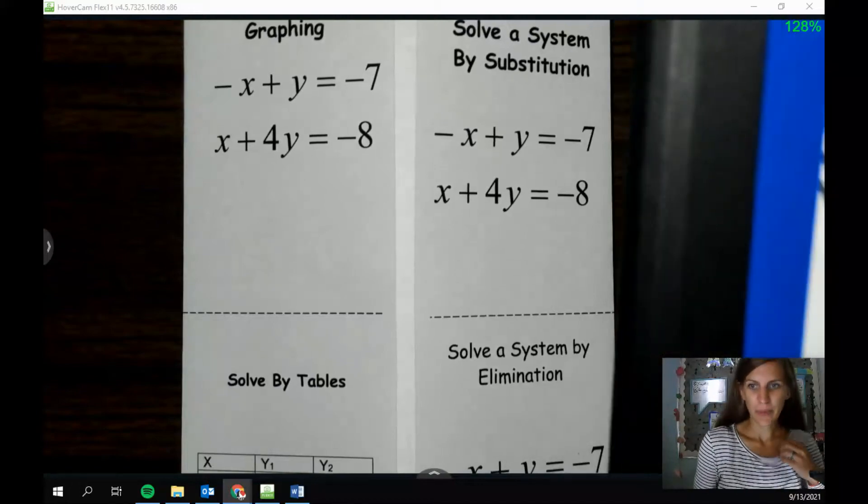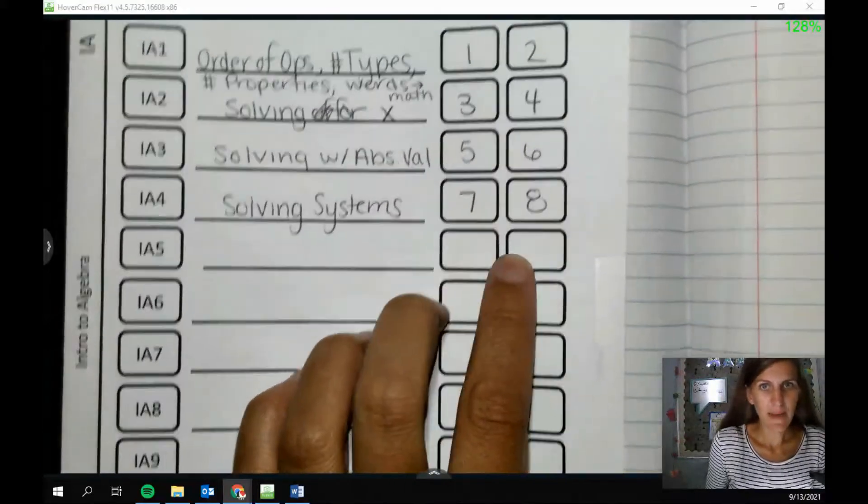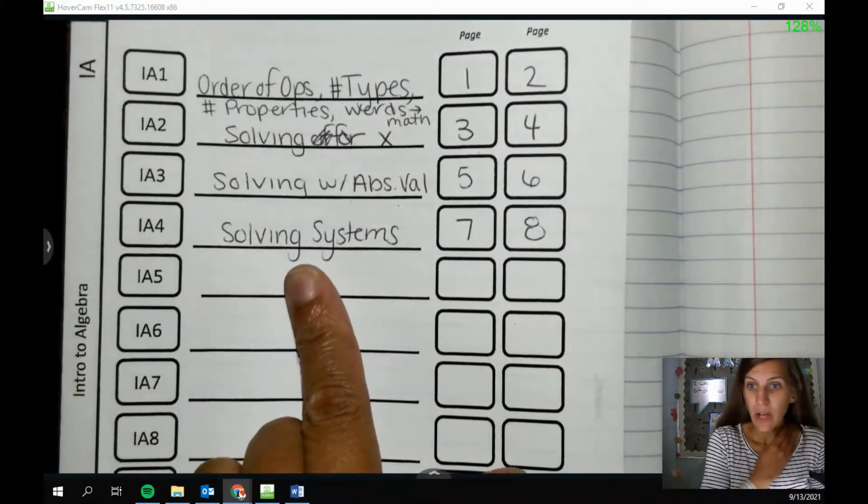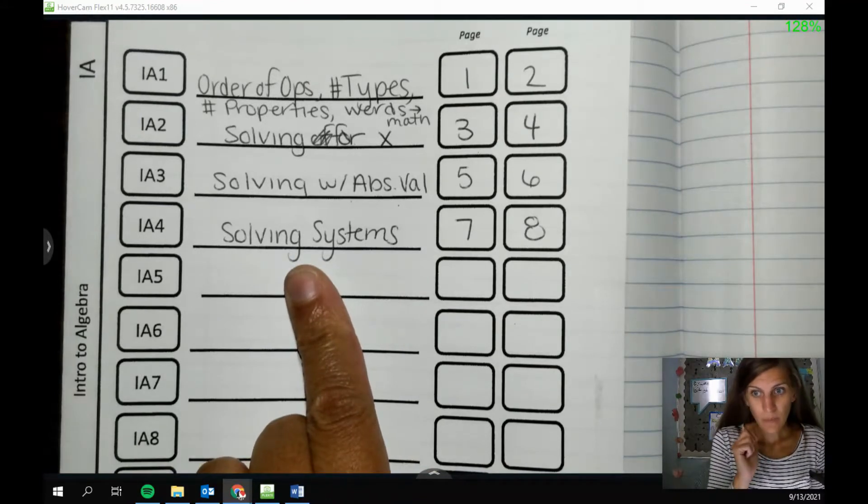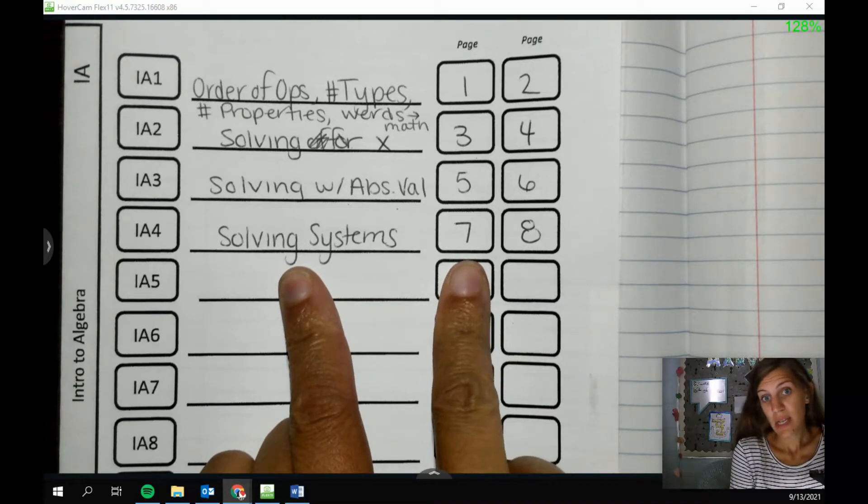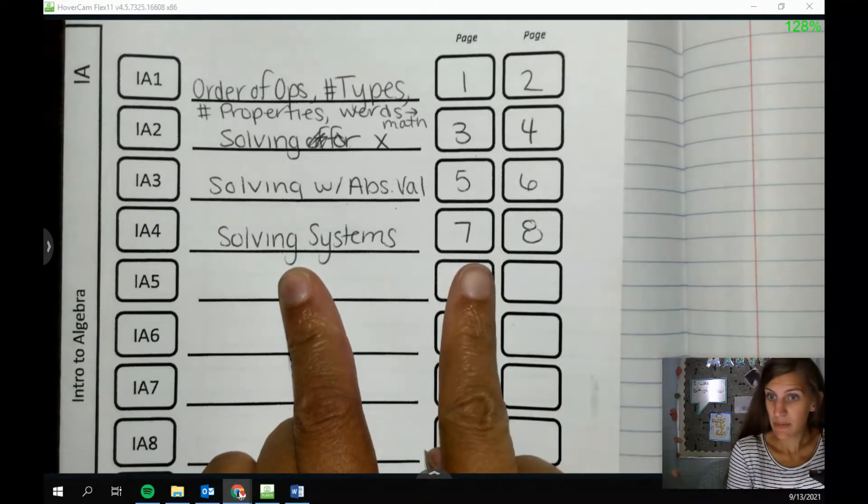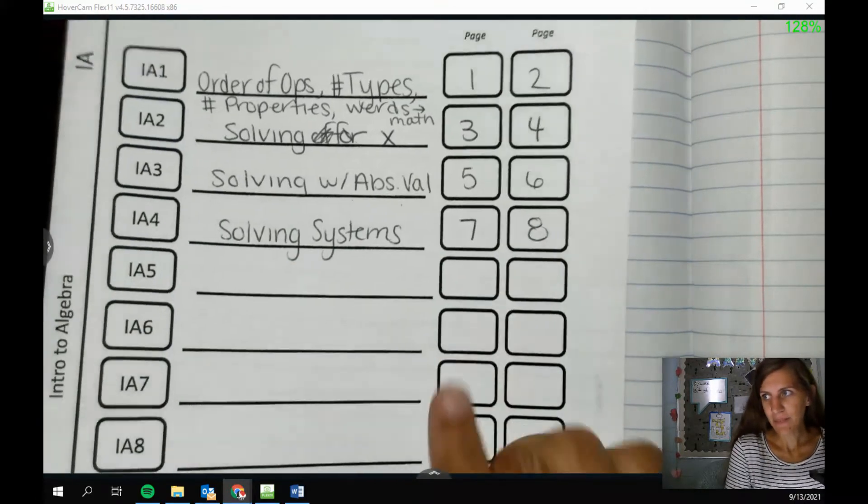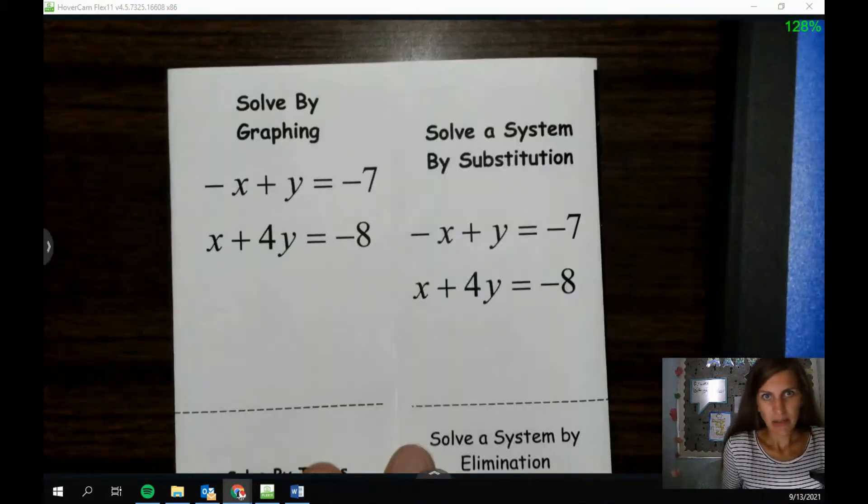All right, guys, we are going to add to our notebook again today. Starting in the table of contents here, we're going to be adding pages 7 and 8. We're going to talk about solving systems. For the notes, I'm going to leave page 7 blank and write some notes on there with you guys. And then on page 8, the one that we are adding is this one here.